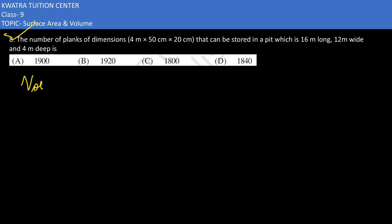So first of all, we need to find the volume of the pit. This is nothing but length times breadth times height: 16 times 12 times 4.